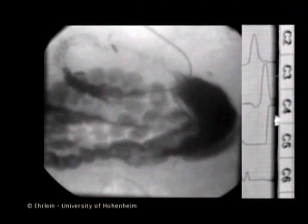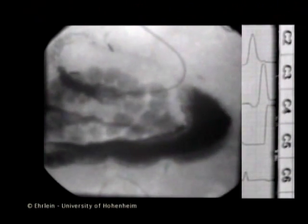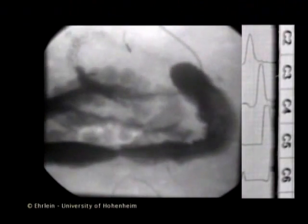A further wave starts at the proximal colon and becomes a lumen-occluding giant contraction, propelling large volumes of digester towards the coil. Just in time, however, the control system obviously recognises that the volume would be too large for the coil. Thus, the giant contraction is reduced to a peristaltic wave and the volume pushed to the coil is diminished.